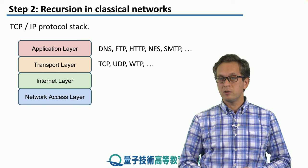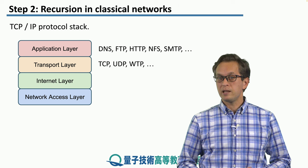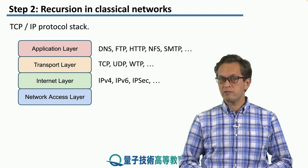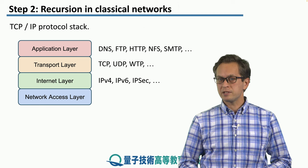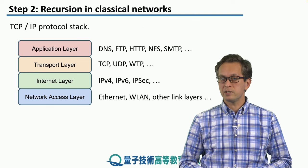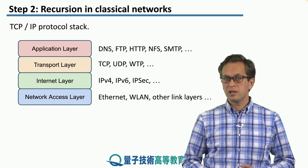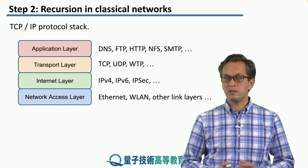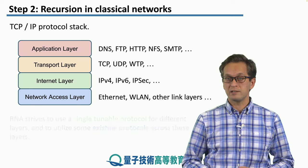At the transport layer we have the usual TCP and UDP and others. At the internet layer we have IPv4, IPv6, and IPsec. And down at the bottom, close to the physical layer, at the network access layer we have Ethernet, WLAN, and other link layer protocols. This is just to show how many different protocols there are in the traditional layering of the classical internet.